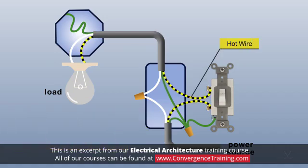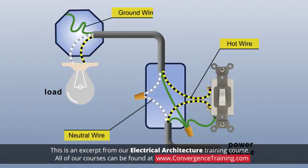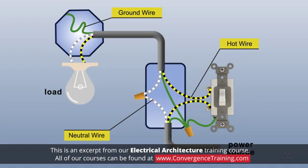Hot wires deliver electricity from the source to the load. Current flows back to the source through neutral wires. Ground wires provide a safe path for current in case a short circuit occurs.